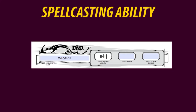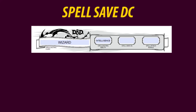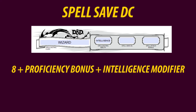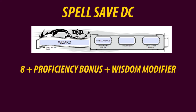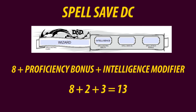Emanon is a wizard, meaning that his spellcasting ability is intelligence. Clerics have wisdom as their spellcasting ability, for example, so check your class features carefully under spellcasting. The spell save DC is the number opponents have to meet or beat to resist your spells. It is calculated as: 8 plus your proficiency bonus plus your intelligence modifier — or wisdom modifier for a cleric. As Emanon is a wizard: 8 + 2 + 3 = 13.